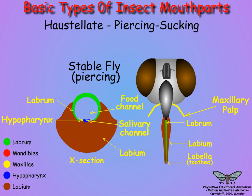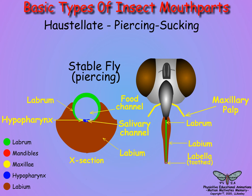In other biting Diptera, the feeding tube is a combination of the labrum, hypopharynx, and labium, with the mandibles absent or reduced, and the maxillae represented by the palps.